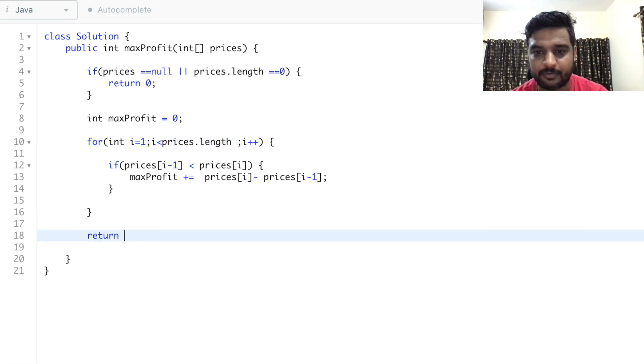Once we're done with this loop, we return maxProfit. That's how we get the maximum profit from these prices. Let me try to submit it.